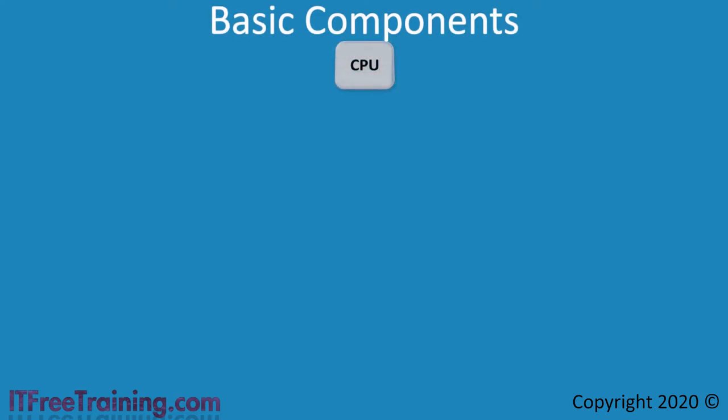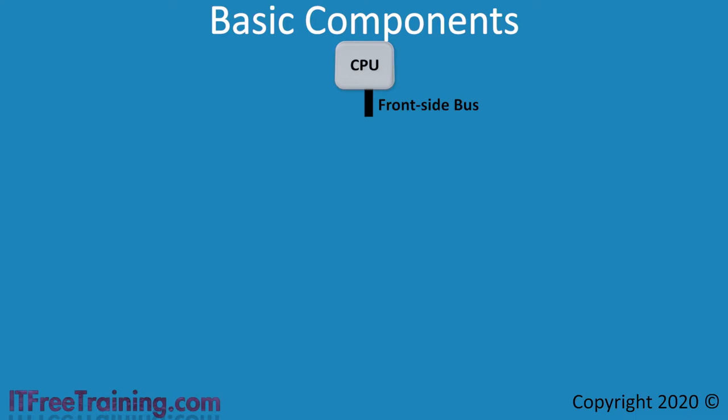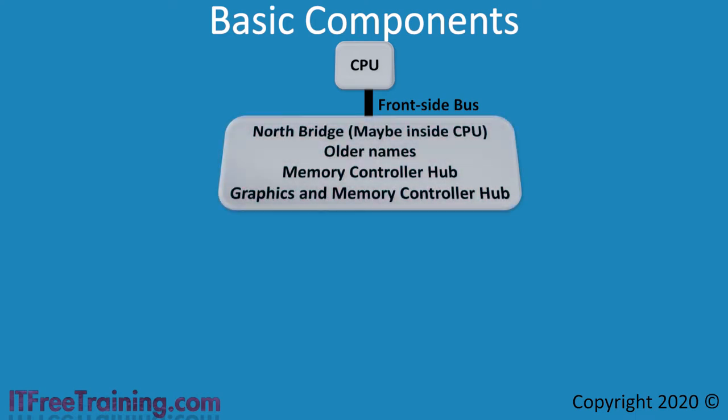To start with I will look at the CPU. The CPU executes the code that allows software to run. In order to achieve this, the CPU needs to communicate with other devices, and to do this the CPU is connected to the front side bus. The front side bus was first used in the early 90s and continues to be used in computers today.